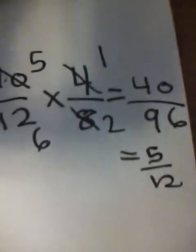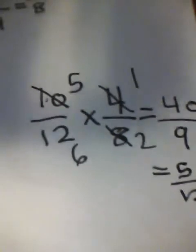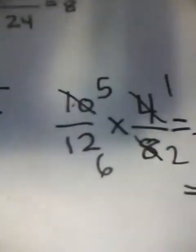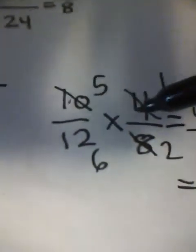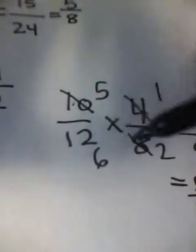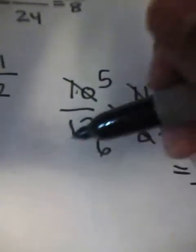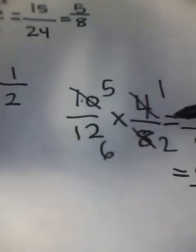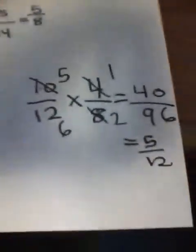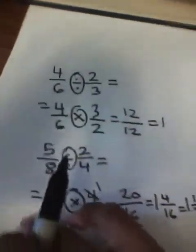One more thing when you're canceling: you can only cancel straight across or diagonally. Canceling side by side never works. Now moving on to division.